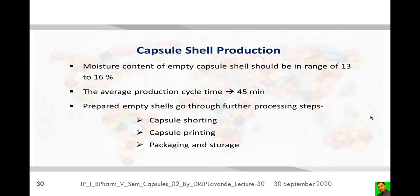The optimum moisture content of empty capsule shells should be 13 to 16% for hard gelatin capsules and 4 to 17% for soft gelatin capsules. The average production cycle time required to produce a capsule shell is 45 minutes, as the process passes through dipping, spinning, drying, stripping, cutting, and joining stages.